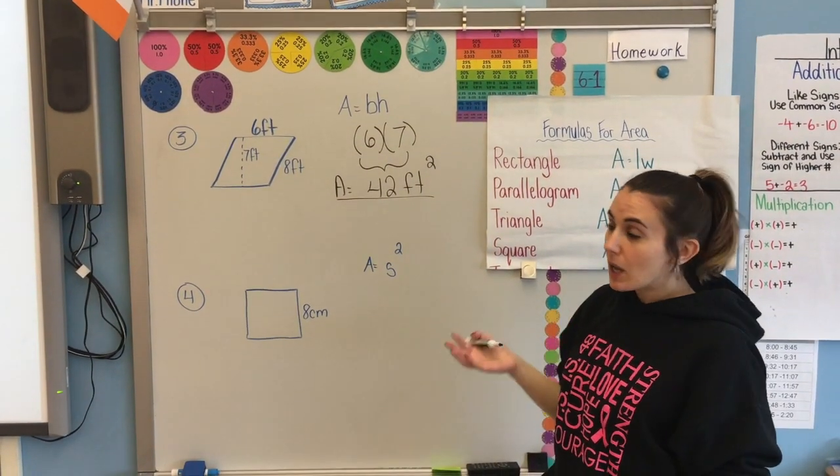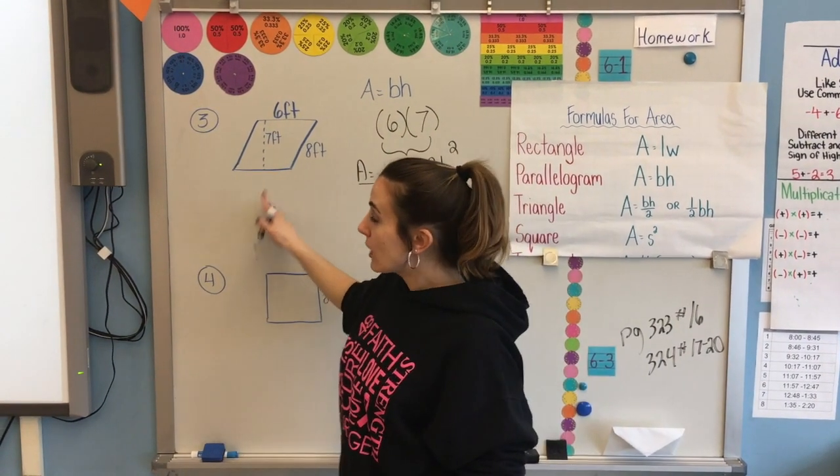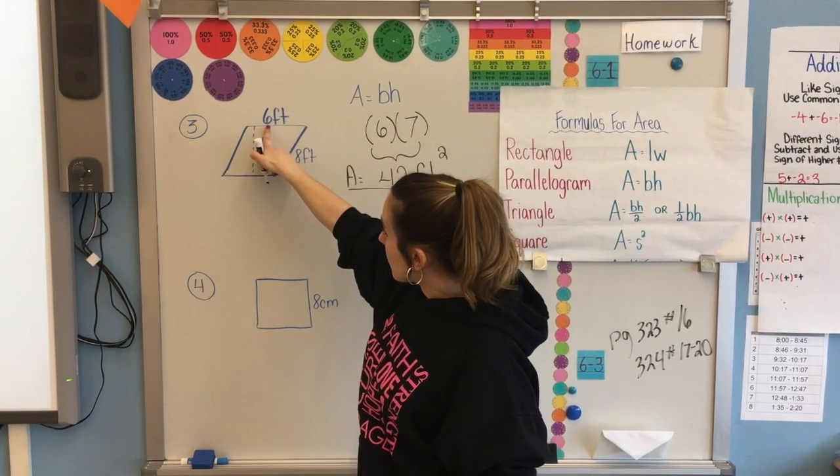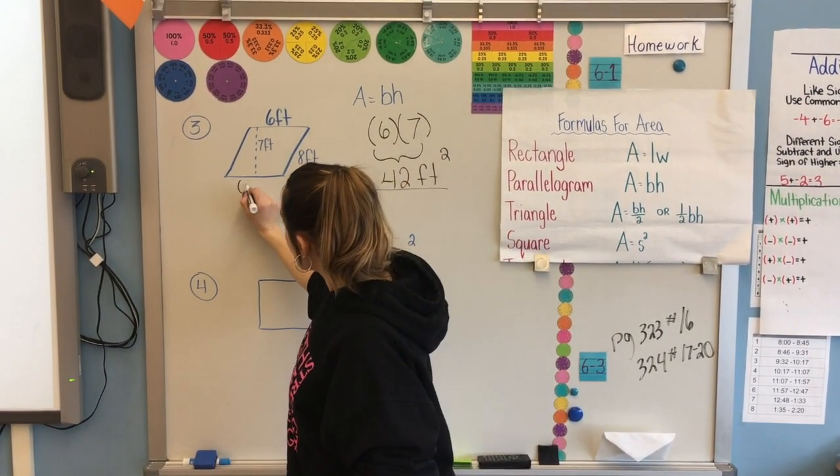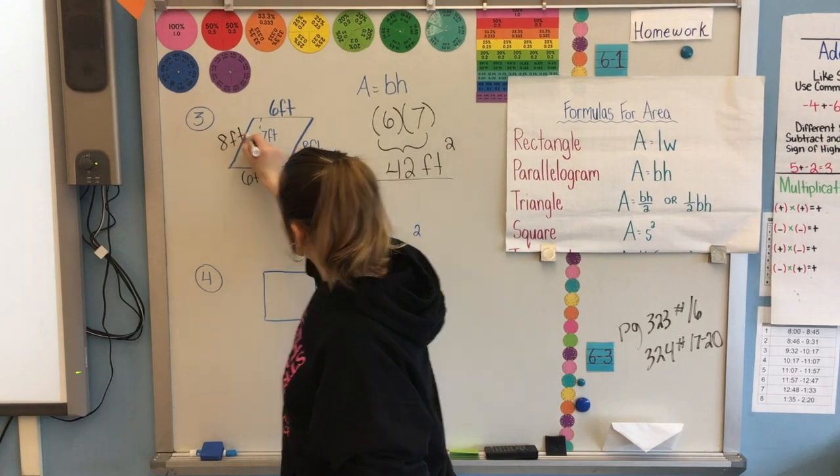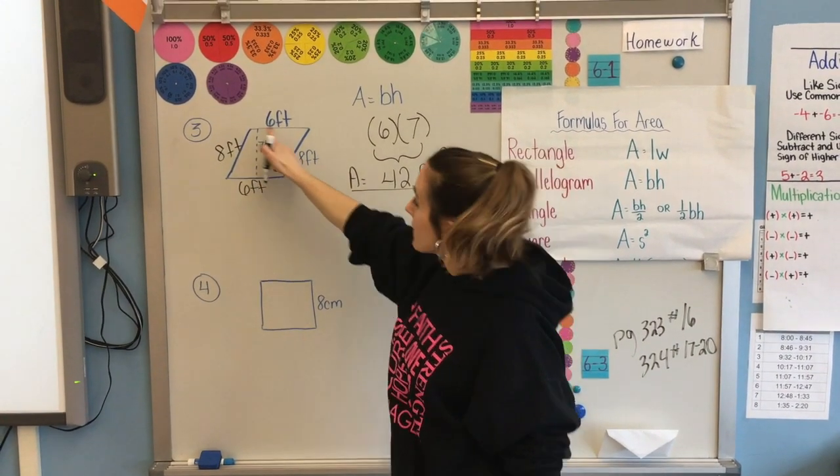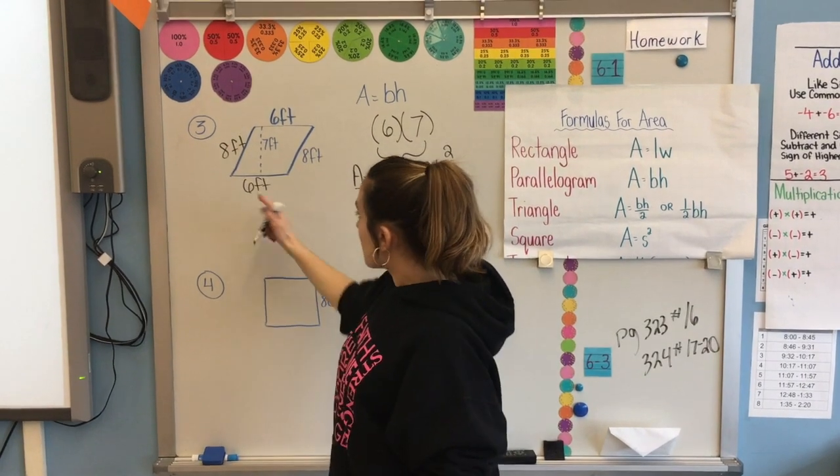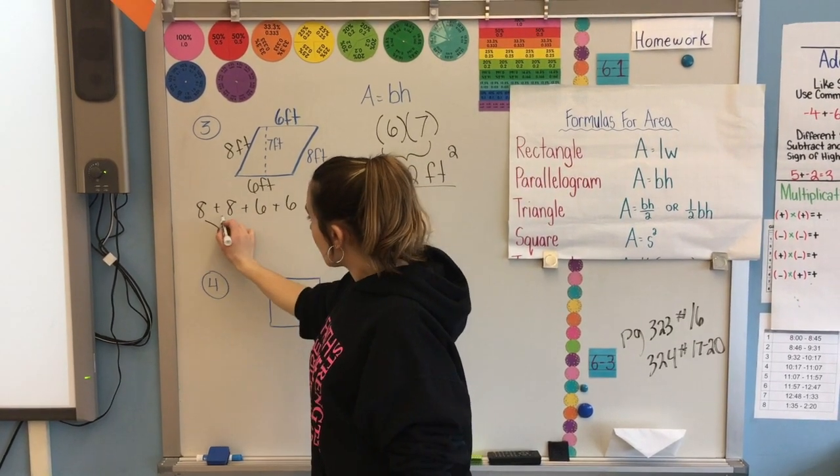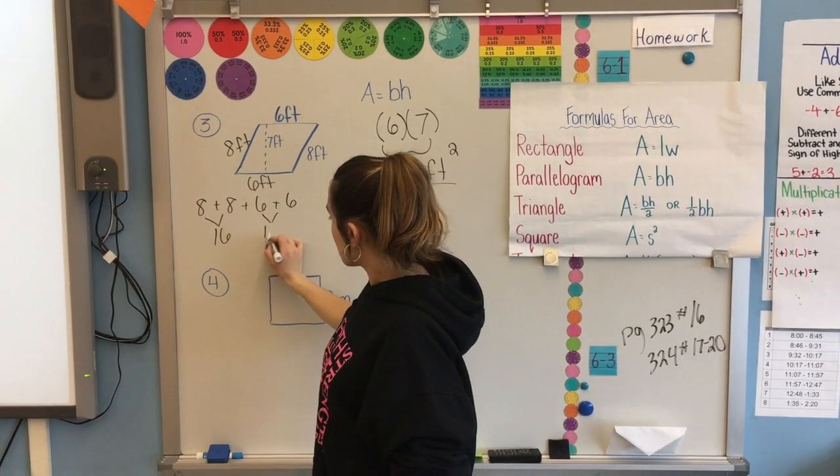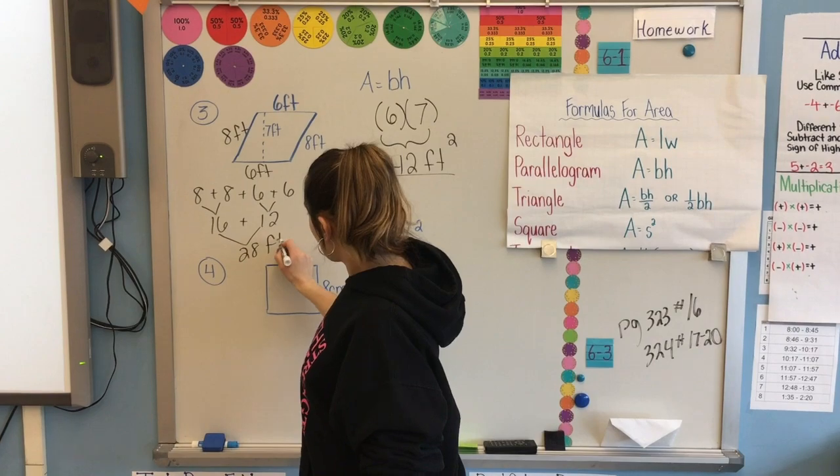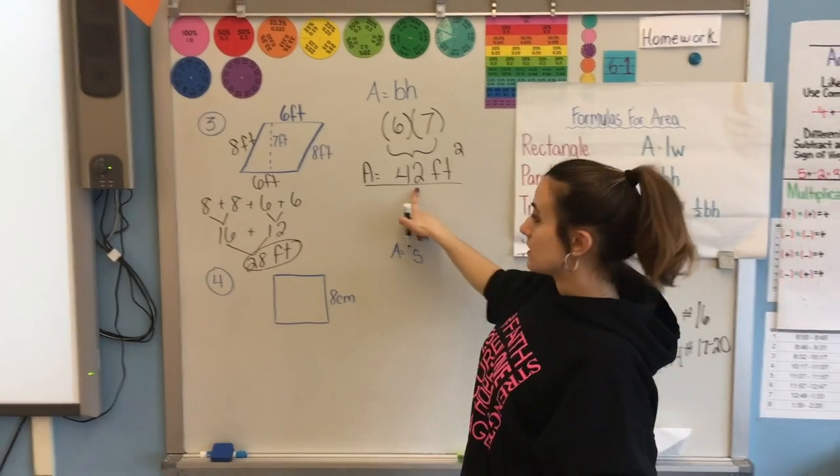Not only are we finding area, but we have to find the perimeter. It's all the length of the whole outside of the shape. So this is six. The opposite would also be six feet. And if this is eight, the opposite would be eight feet. We're not including the seven because the seven's on the inside. So I'm going to add up all my outside measurements. Eight plus eight plus six plus six. Eight and eight is 16. Six and six is 12. If I add those together, I get 28 feet. That is my perimeter.